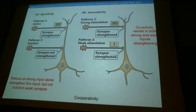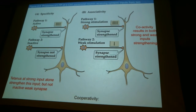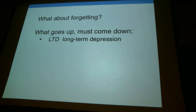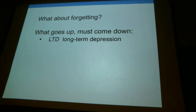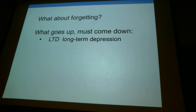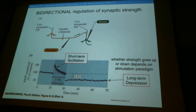We've talked a lot about how to make synapses stronger. But basically, what goes up must come down. You can't just continuously strengthen all of your synapses endlessly. There's a limit to how big you can make individual synapses, but also you can weaken synapses. This is a phenomenon known as long-term depression. This is what's known as bidirectional regulation of synaptic strength.